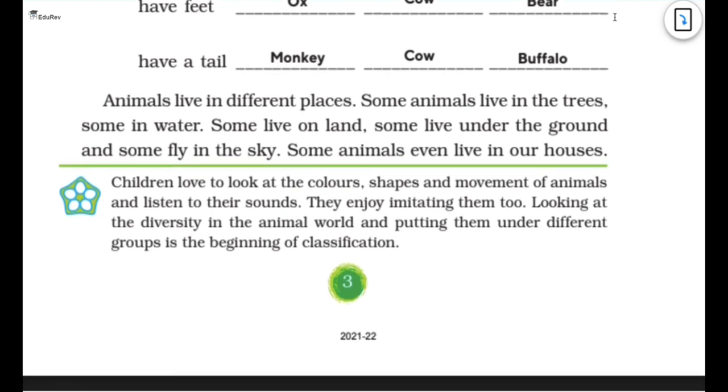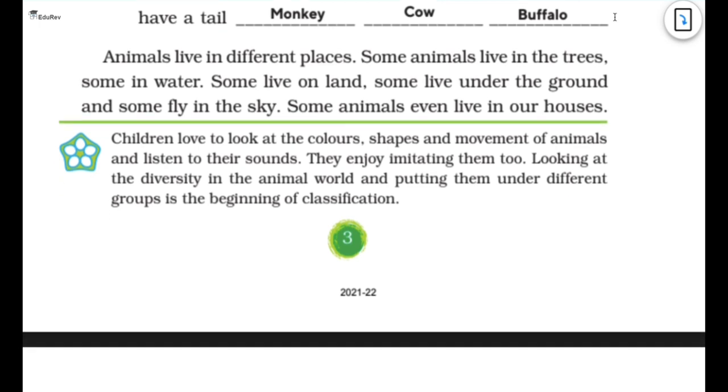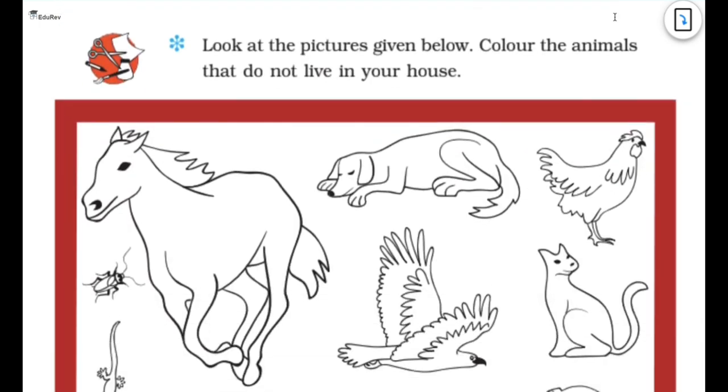Now animal lives in different places. That is so true. Some live in water, some live on land, some live on trees. They all live at different places. Some animal live in trees, some in water, some live on land, some live under the ground and some fly in the sky. Some animals even live in our houses like dogs and cats. We people also have rats. So there are so many animals which live in our houses as well.